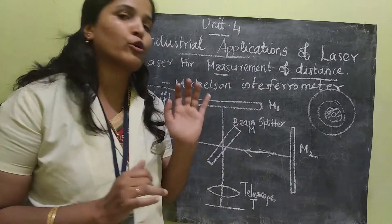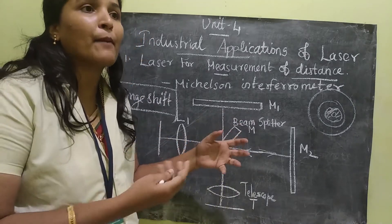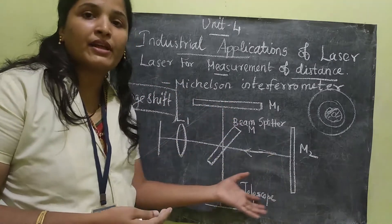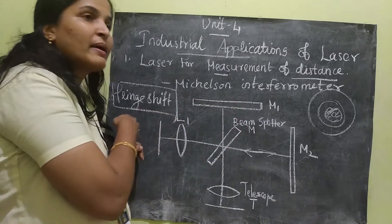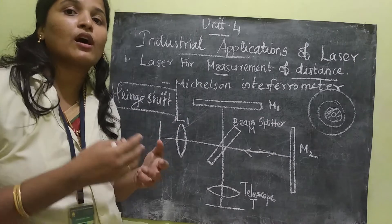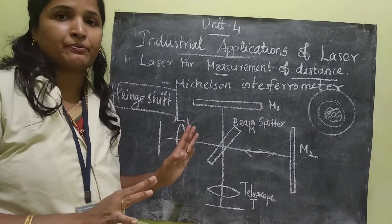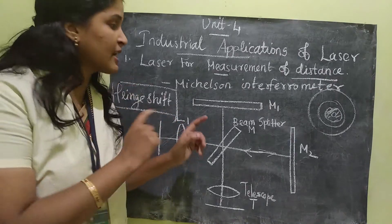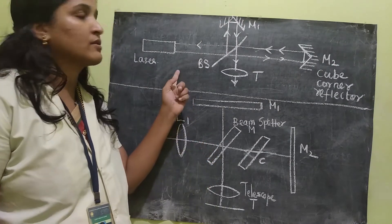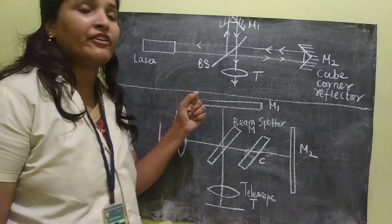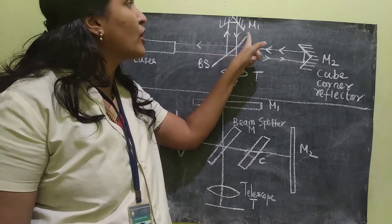However, this Michelson interferometer has a drawback. Since we are using laser and many lenses, there will be some reflections from the lenses, and all those reflected beams may come back to the laser source itself. This drawback is overcome by using a small modification — instead of plane mirrors used at M1 and M2, some cube corner reflectors are used.